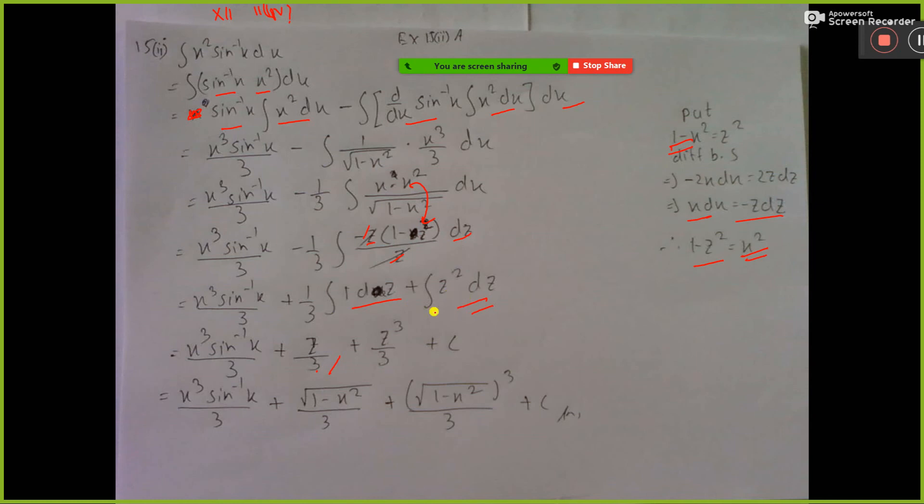And this 3, that 3, it will be 9, plus c, where c is integration constant. Now put the value of z and get answer, that's all.